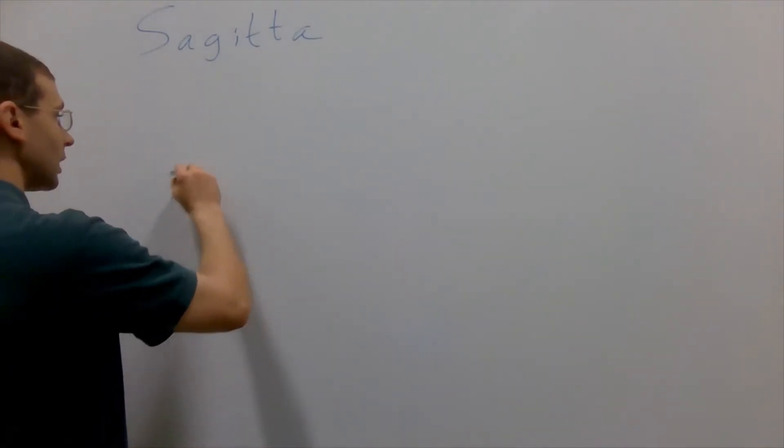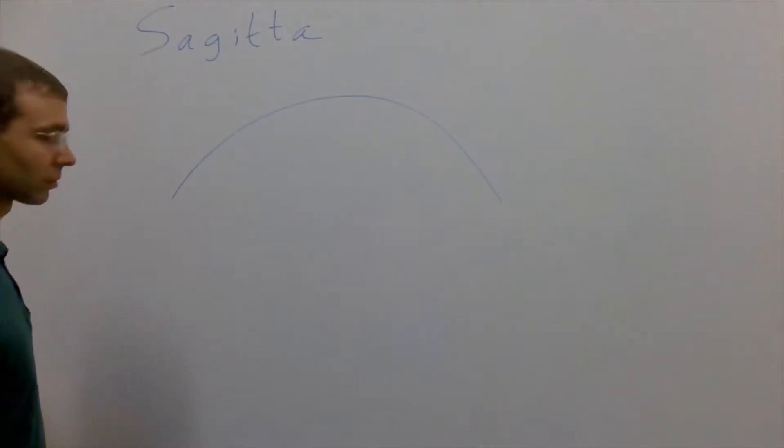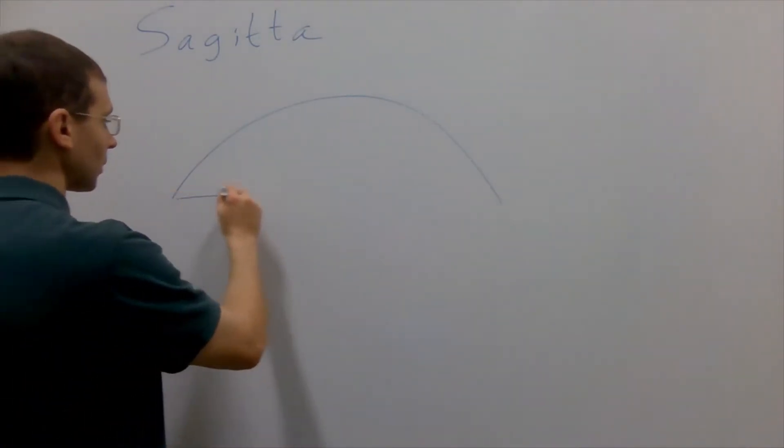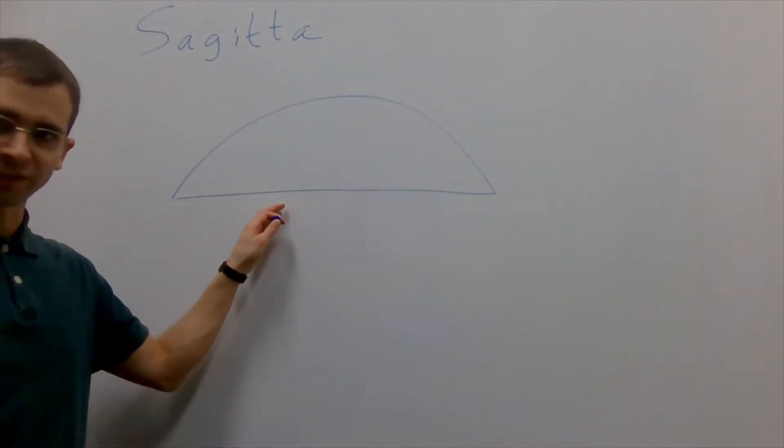SAG is short for Sagitta. If we take a chunk of a circle, an arc we call it, and we measure from the chord that cut off this arc...